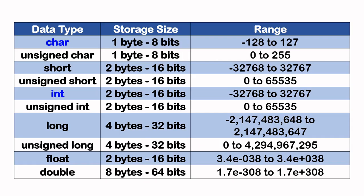Let's take a look at the typical data types available in C. I've highlighted char here. Char requires one byte of memory — that is 8 bits — and it ranges from minus 128 to positive 127.